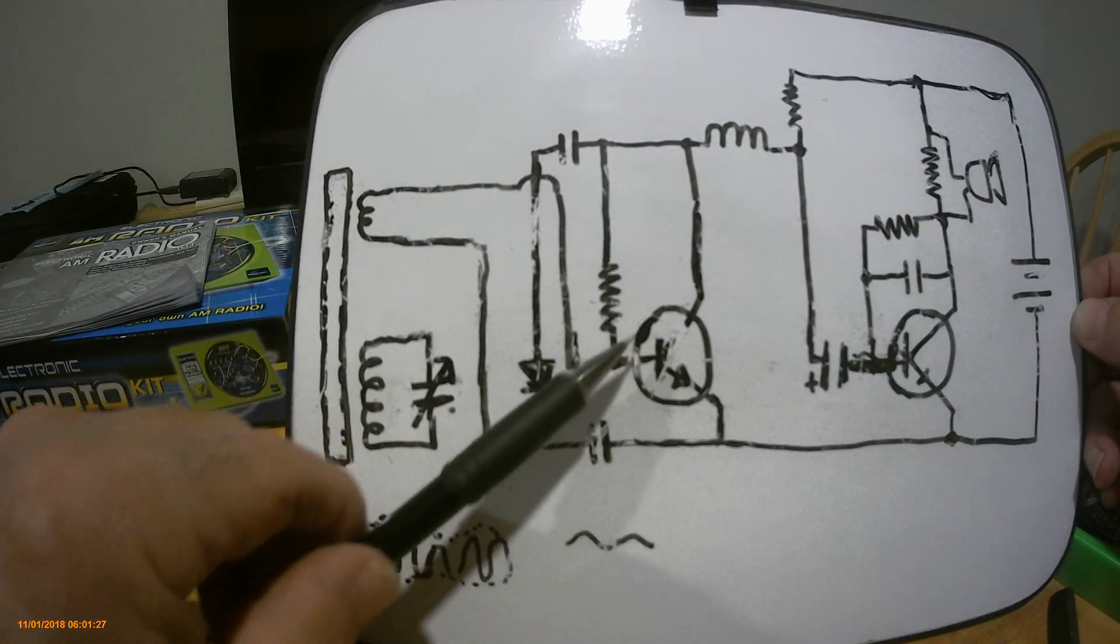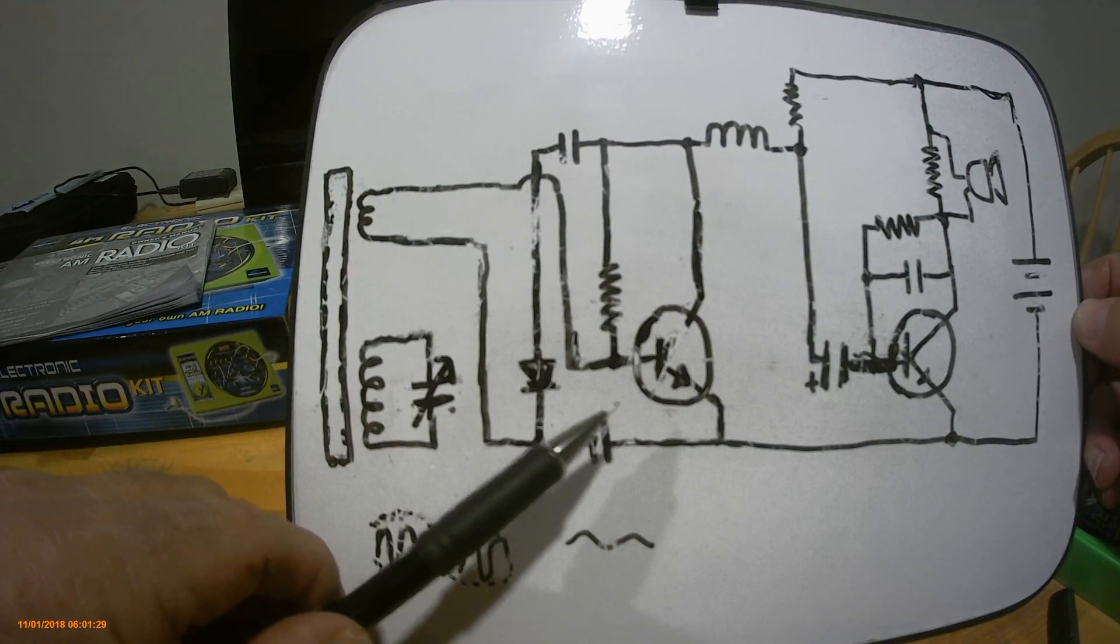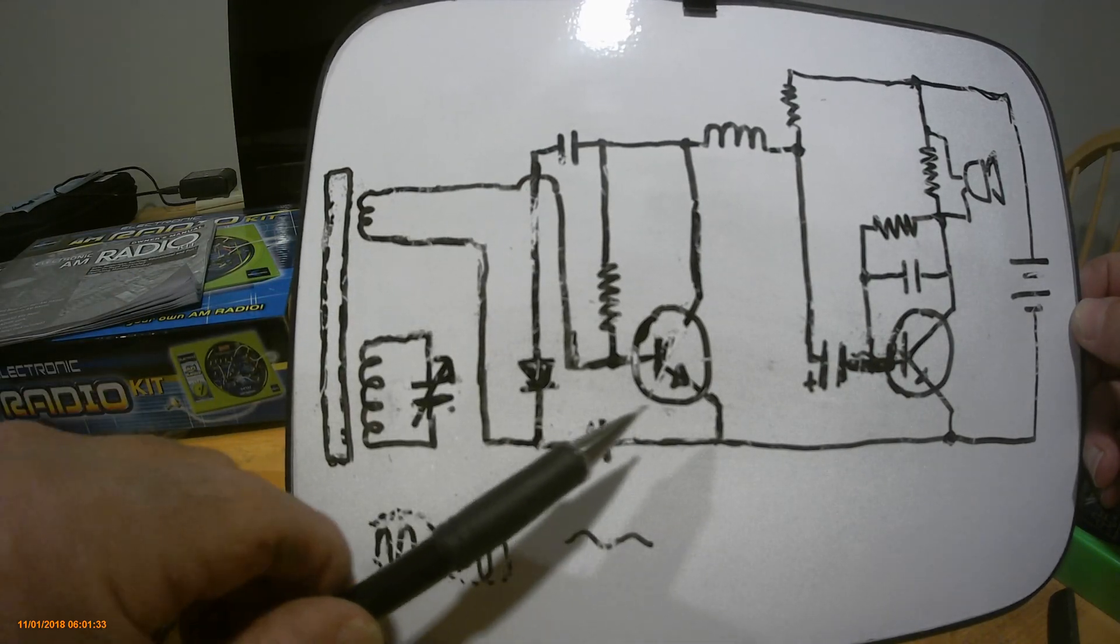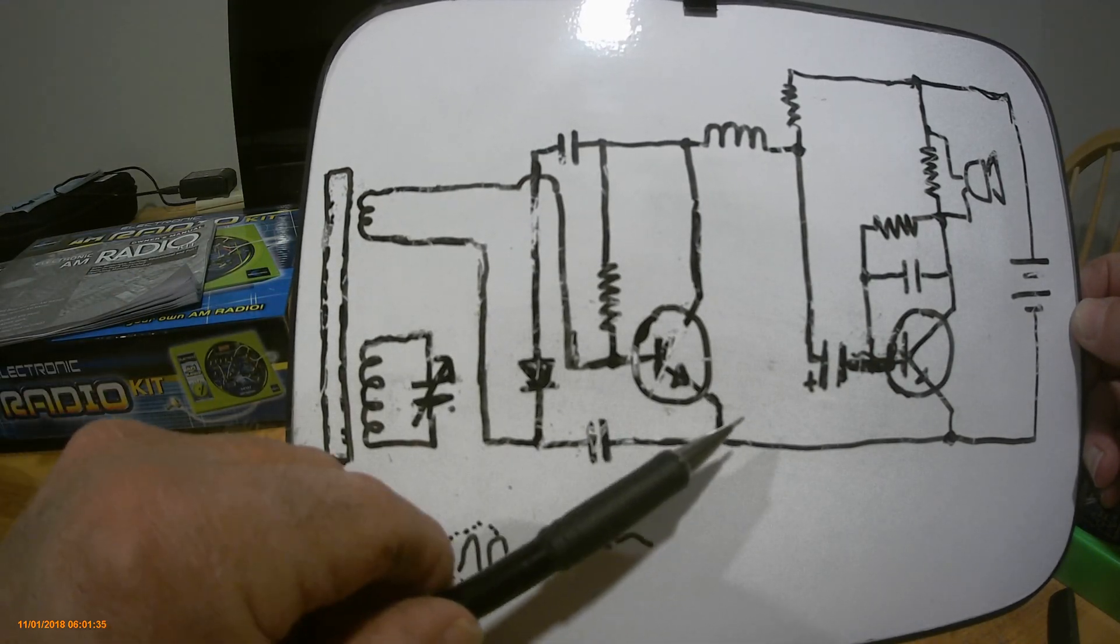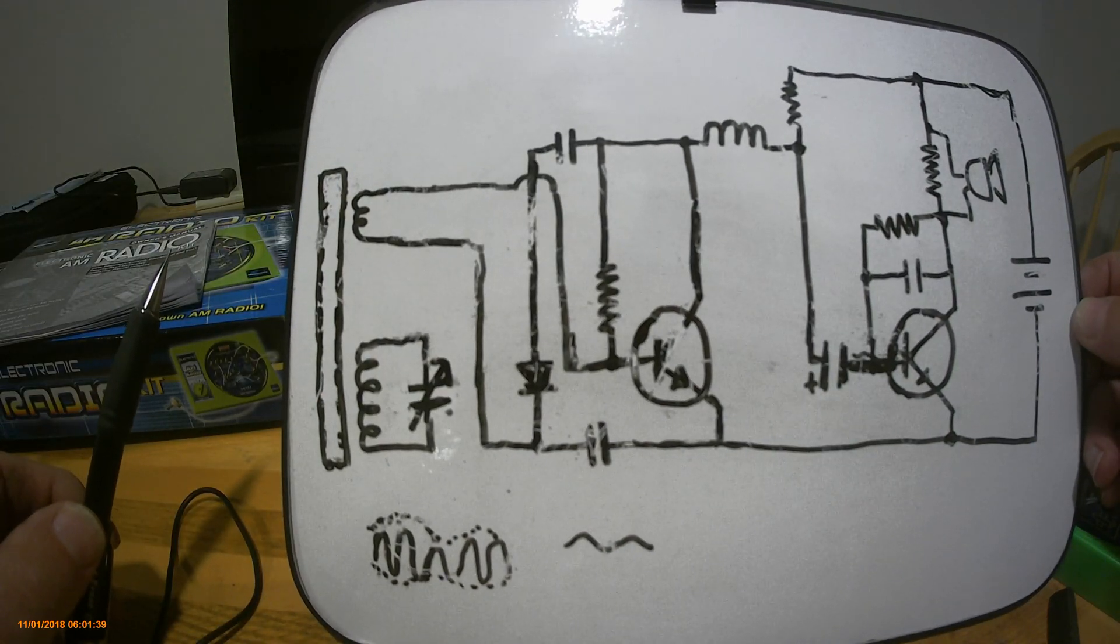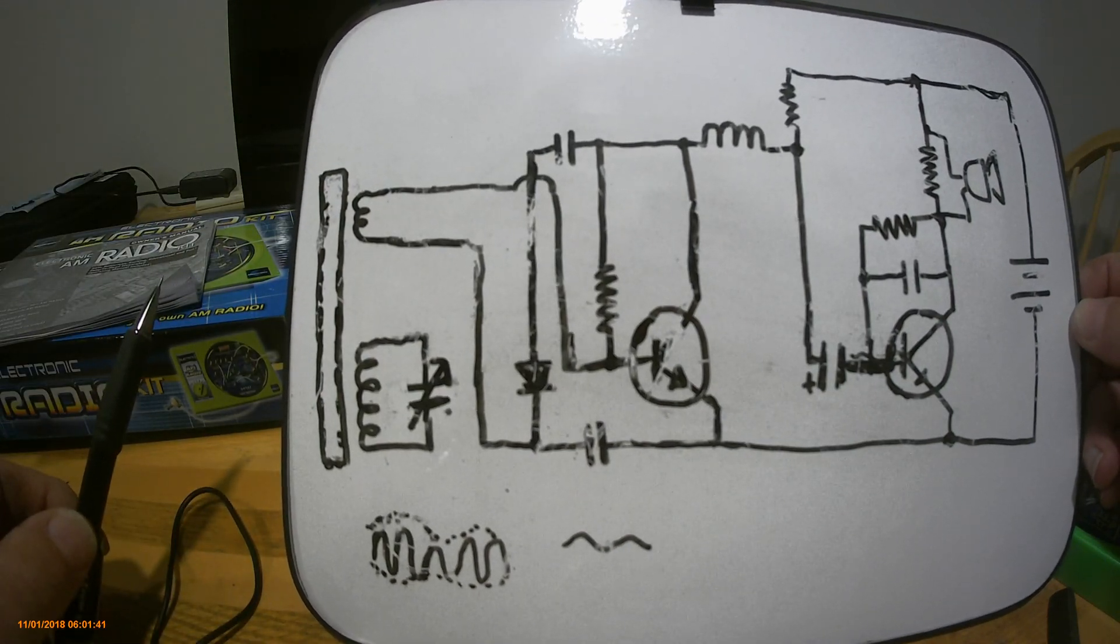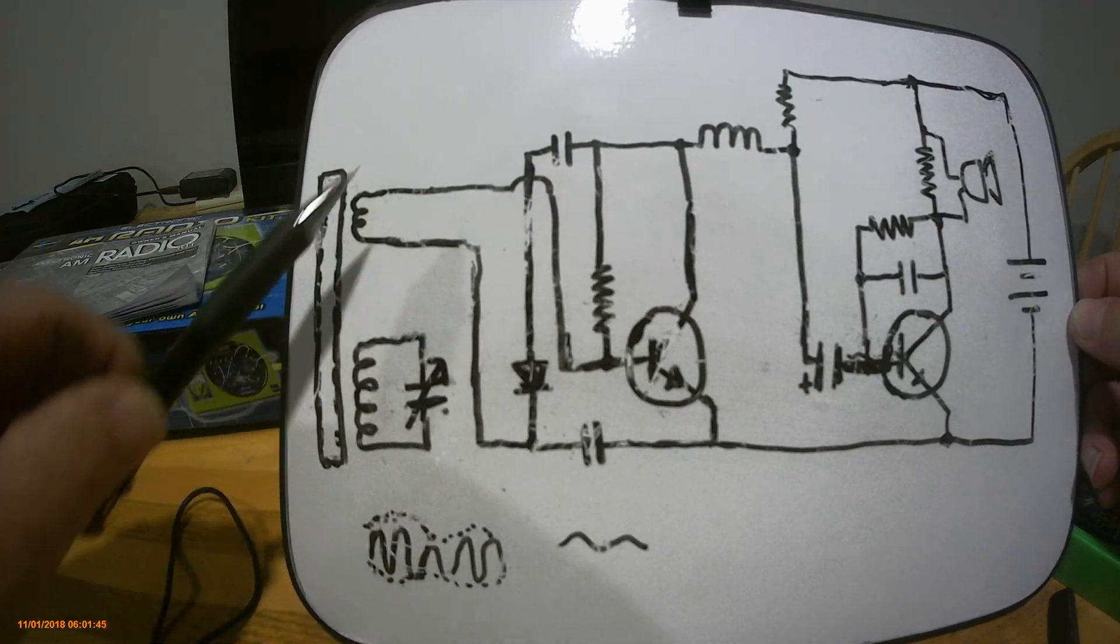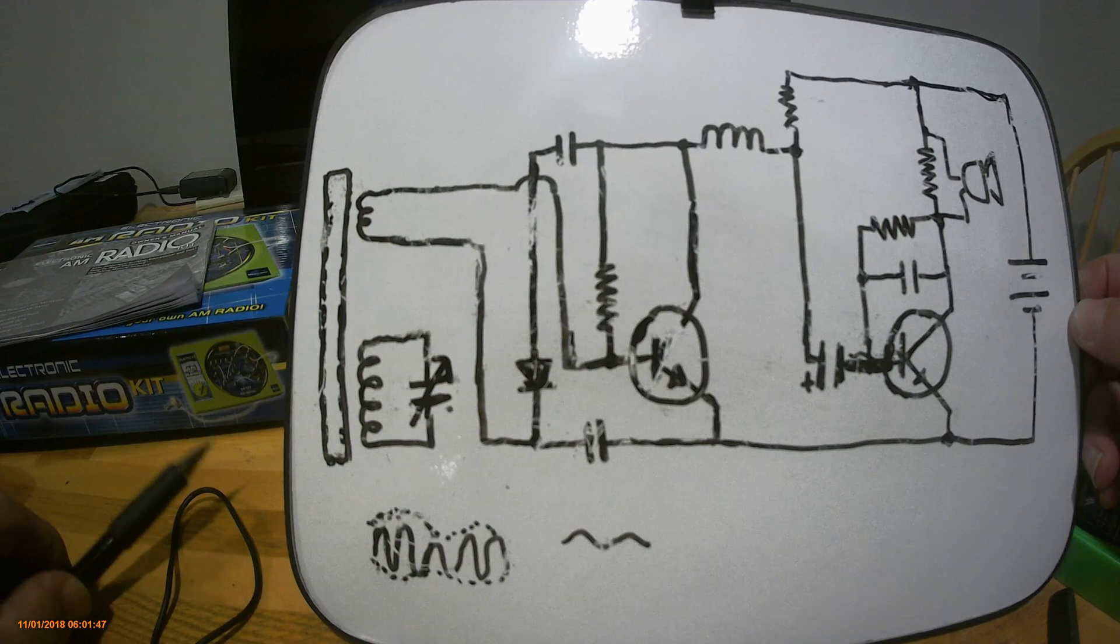This particular transistor actually does two things. It amplifies both the radio frequencies coming off the antenna and also amplifies the audio signals that are being brought around here. This is known as a reflex circuit. It's been around since about World War I, and it's very effective. It helps make this radio very efficient for just a two transistor radio.